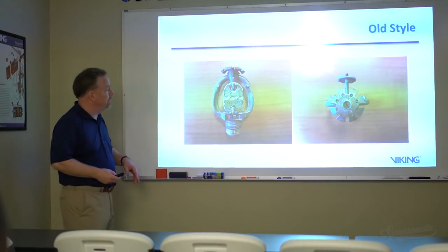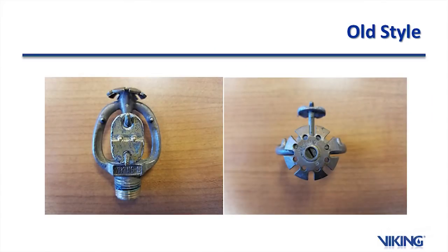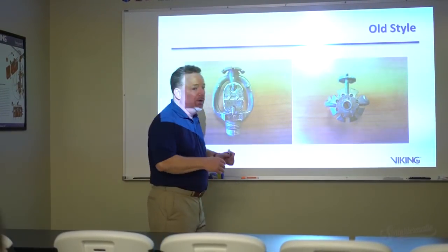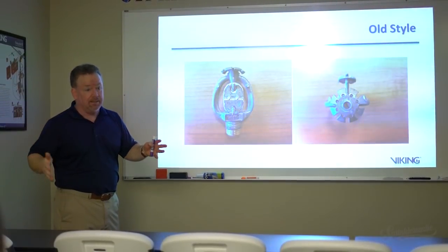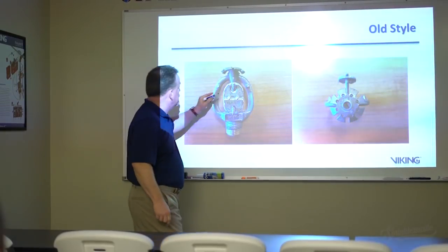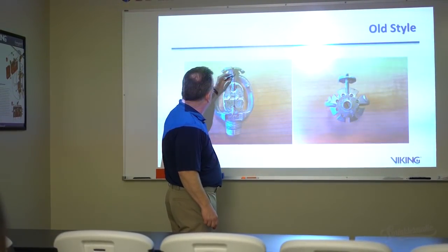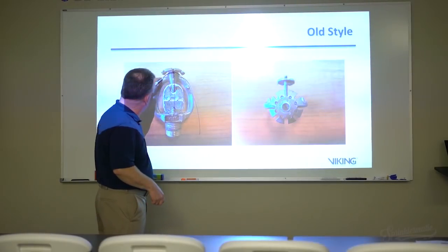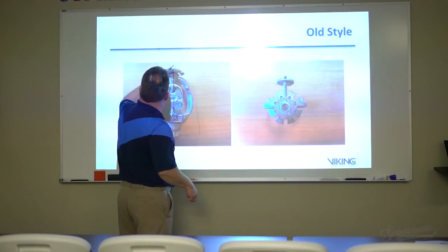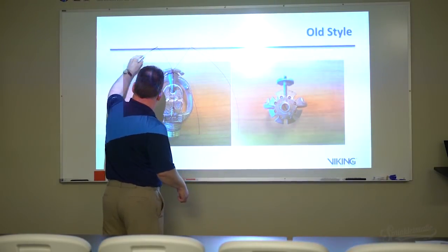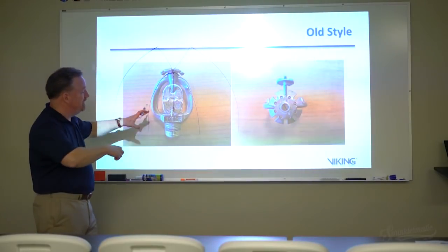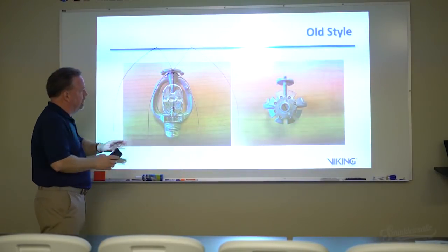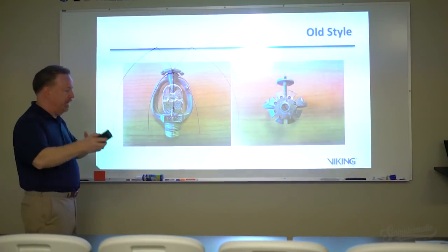Here's an example of an old style Viking sprinkler from 1942. It relied heavily on the ceiling to create its distribution pattern — about 20 percent of the water went down and the rest went up, hit the ceiling, and spread out. The problem was limited coverage, so old style sprinklers required very tight spacing to ensure total coverage.